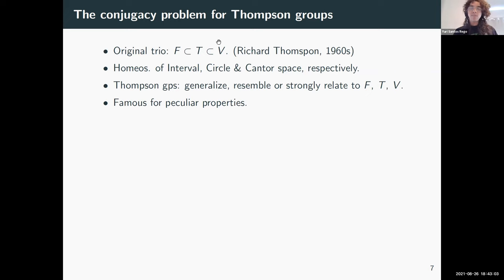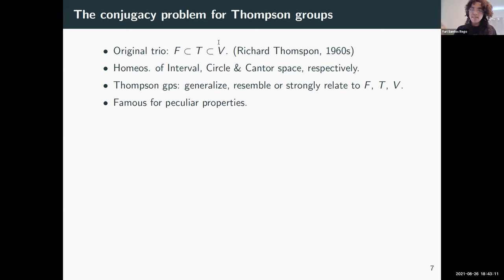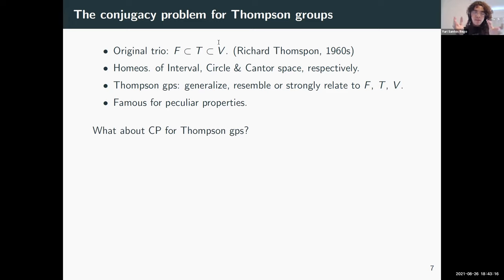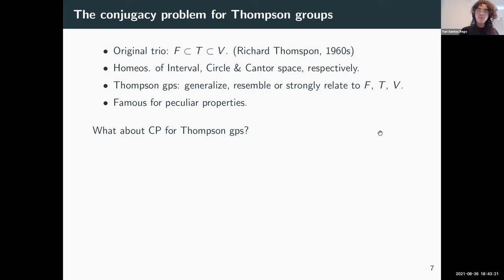Thompson-like groups can also be used to construct infinitely many quasi-isometric classes of finitely presented simple groups. V, despite being of type F-infinity — which is much stronger than being finitely presented — contains all finite groups, so in a sense it's a huge group. What about the conjugacy problem for Thompson groups?